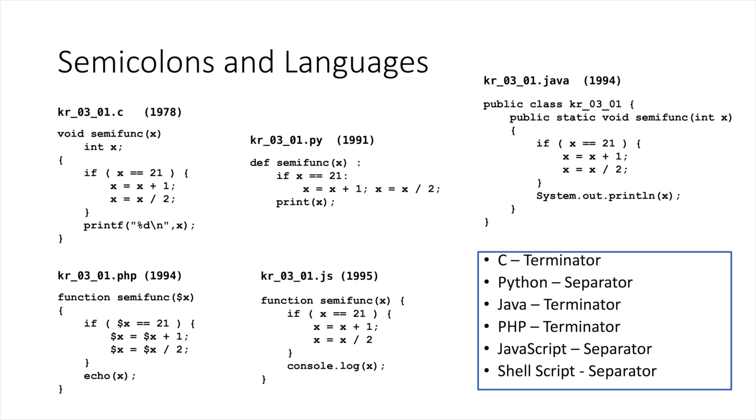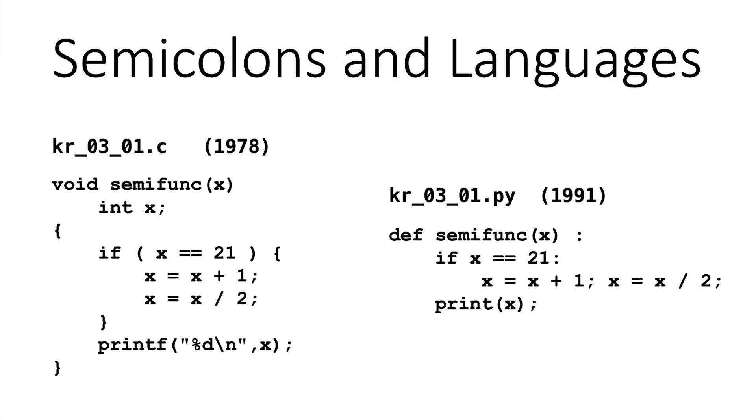So I love semicolon-based languages and we have a whole bunch of semicolon-based languages that we've learned and are going to learn. Certainly in 1978, the C programming language with its non-syntactically important spacing. The key to C is that the semicolon is a terminator and every statement must be terminated by a semicolon. So we say x equals x plus 1 semicolon and x equals x divided by 2 semicolon. The printf ends in a semicolon.